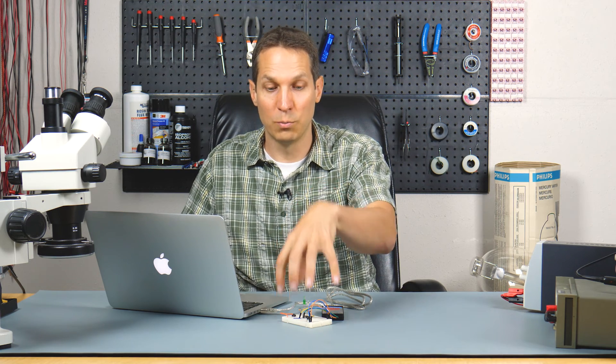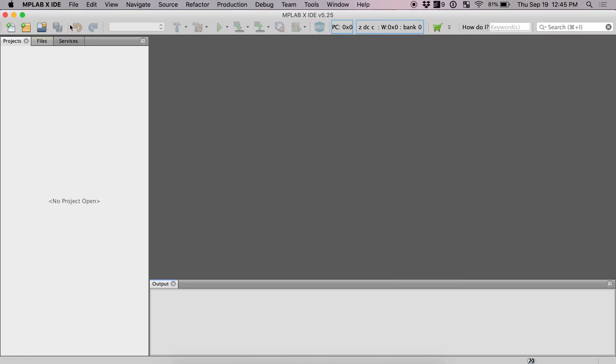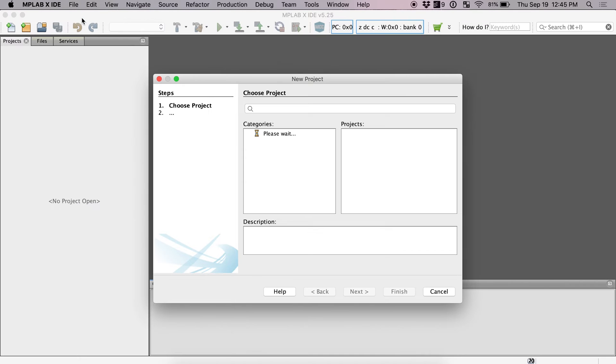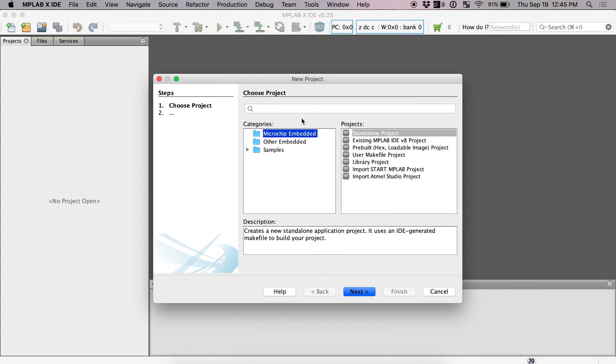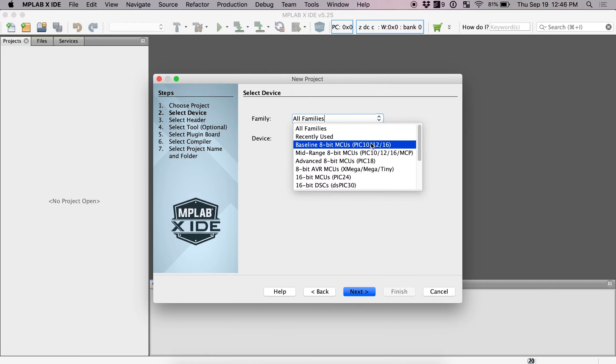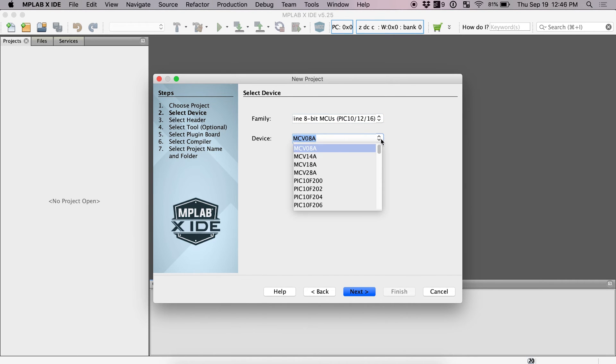We go to file and then new project. And then we will want a standalone project. We click next and then we can just go here and do one of our baseline 8-bit MCUs and find the PIC 10F 200.